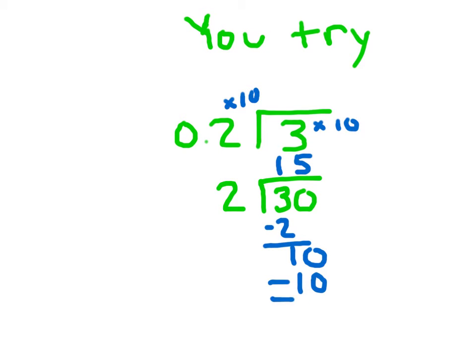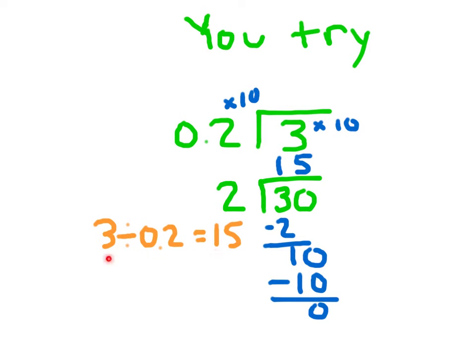And 10 minus 10 is 0. So I have 15 — and that's our answer. 3 divided by 0.2 equals 15. 3 divided by 2 tenths equals 15.